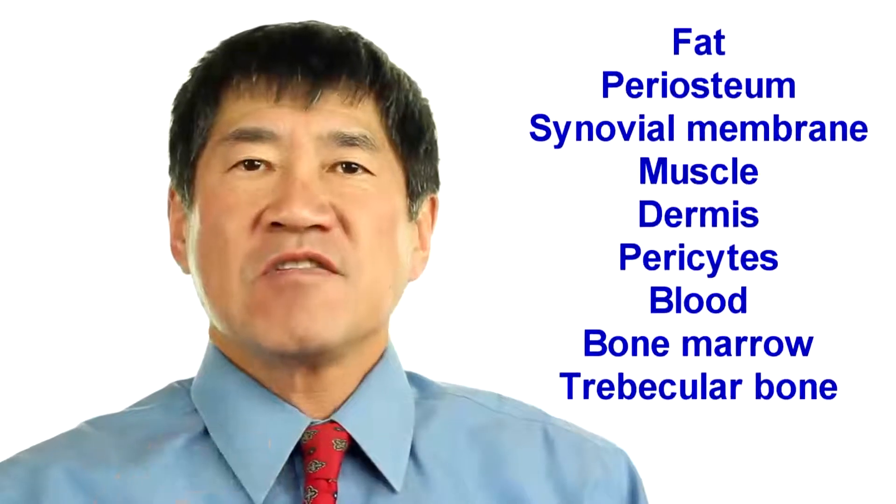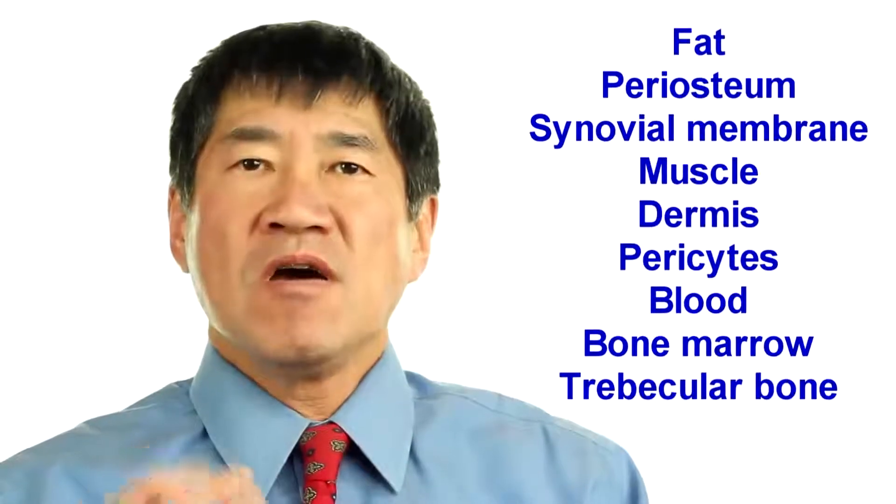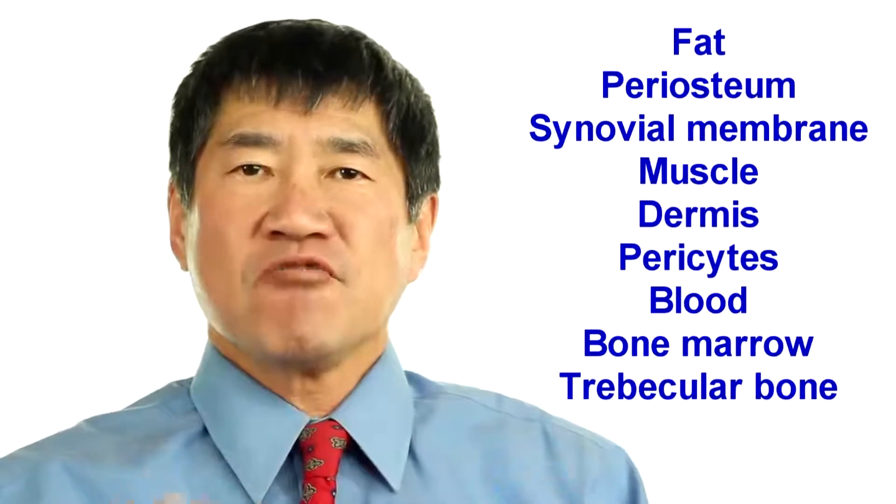Examples of these tissues include adipose tissue or fat, periosteum, synovial membrane, muscle, dermis, pericytes, bone marrow, blood, and most recently trabecular bone.